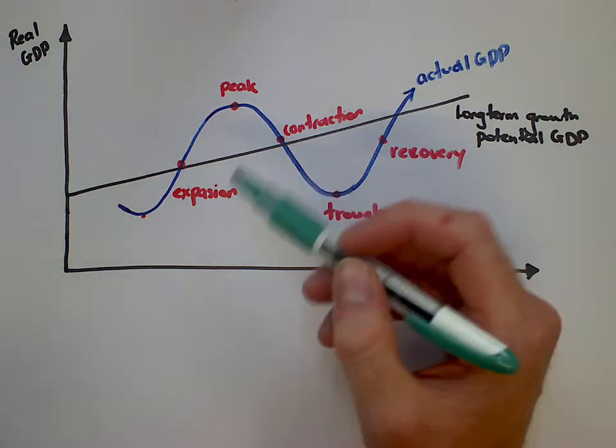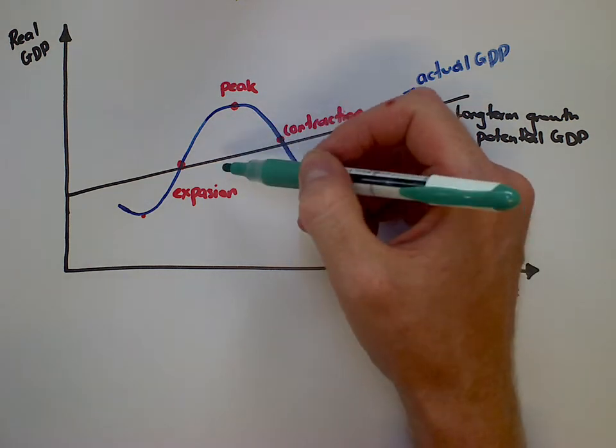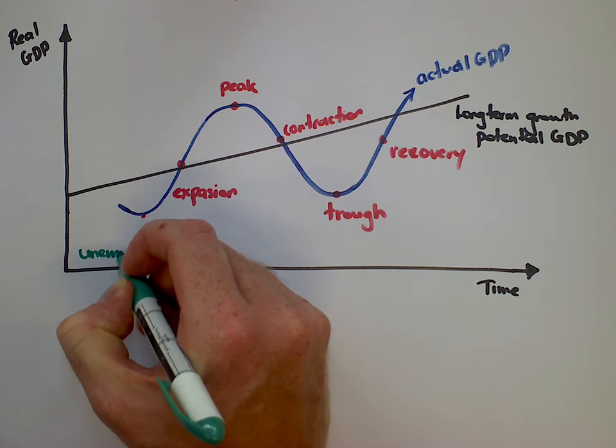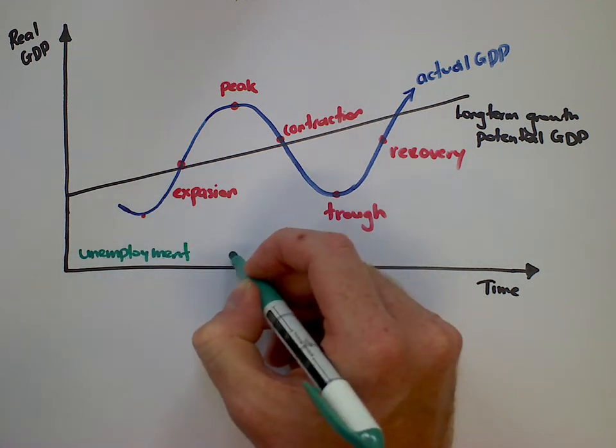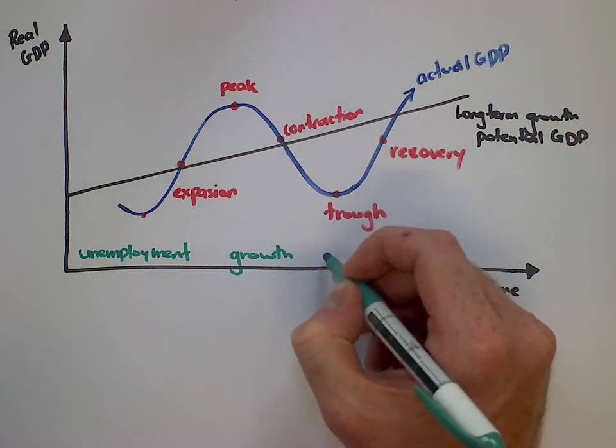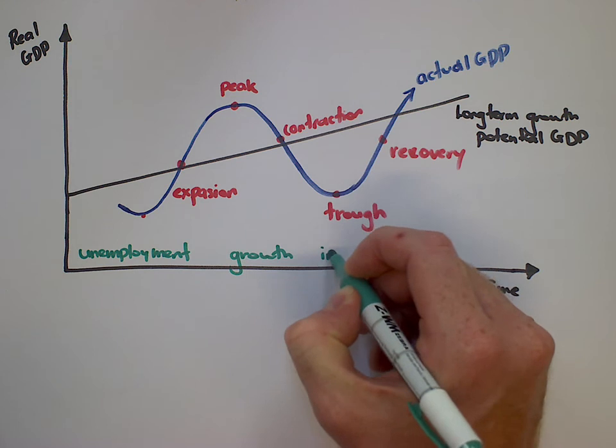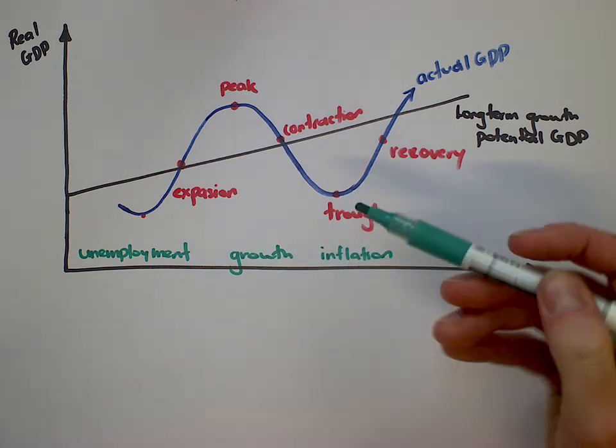And along in different times, there are three important variables that change, and the three important variables are these things: unemployment, economic growth itself, and also inflation. Inflation being the changes in the price levels.